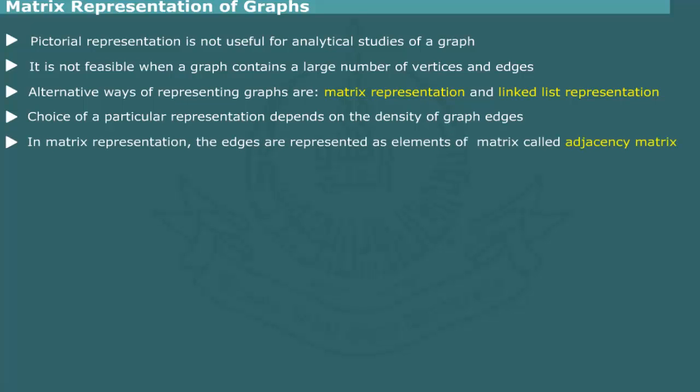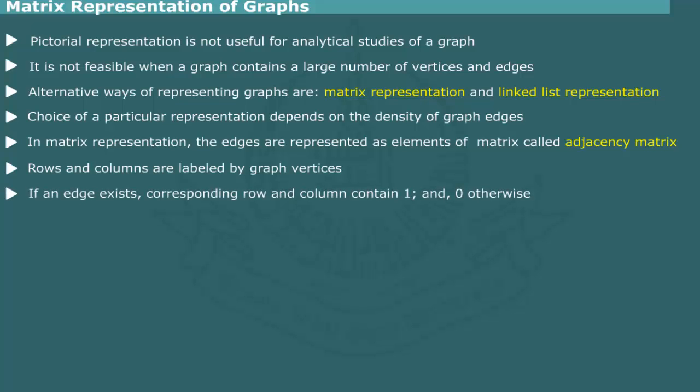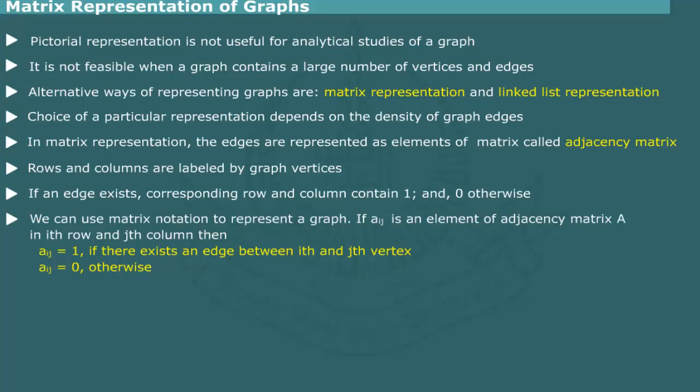In matrix representation, the edges between the vertices are represented as elements of a matrix called adjacency matrix. The rows and columns of the matrix are labeled by graph vertices. If an edge between a pair of vertices exists, then the corresponding row and column contains 1 and 0 otherwise. We can algebraically define an adjacency matrix by using matrix notation. If A_ij is an element of a matrix A in ith row and jth column, then A_ij equals 1 if there exists an edge between ith and jth vertex, A_ij equals 0 otherwise.